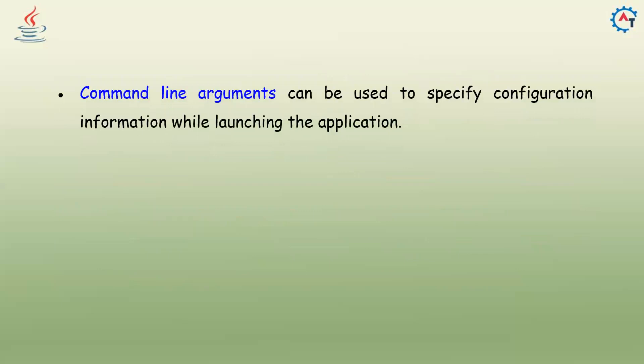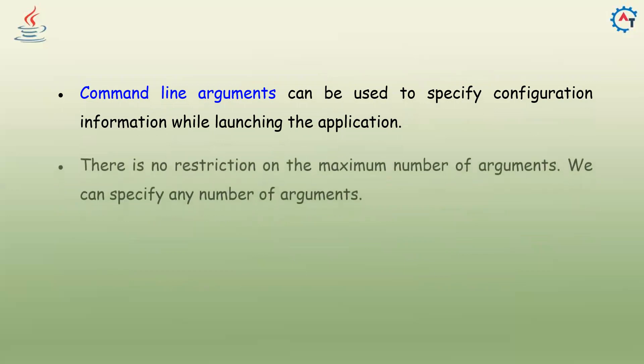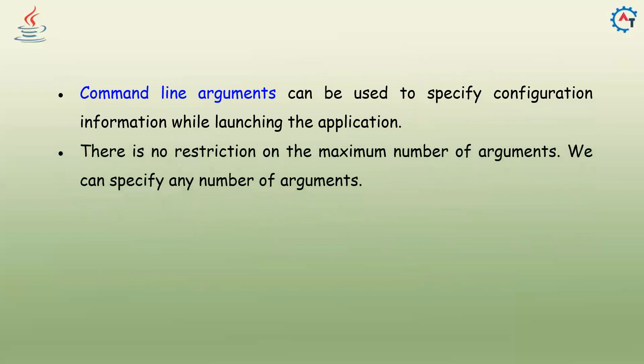Command line arguments can be used to specify configuration information while launching the application. Sometimes in real time, if you want to pass some configuration information, you can pass it along with your program execution from the command line. There is no restriction on the maximum number of arguments — we can specify any number of arguments. Whatever you pass from the command line, everything is considered as strings.